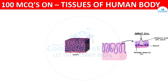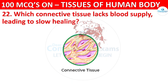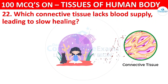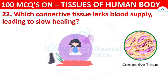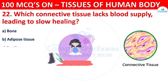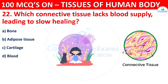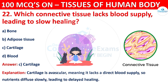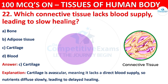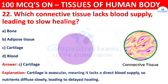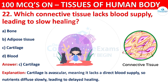Question number twenty-two: which connective tissue lacks blood supply, leading to slow healing? Options are bone, adipose tissue, cartilage, or blood. The correct answer is C, that is cartilage. Cartilage is avascular, meaning it lacks a direct blood supply, so nutrients diffuse slowly, leading to a delayed healing process.